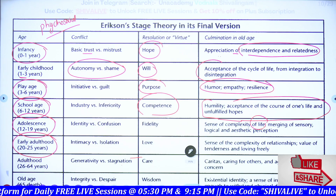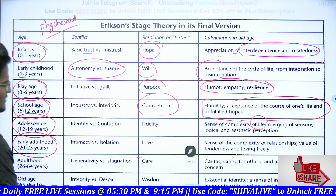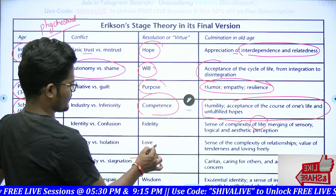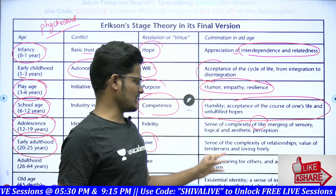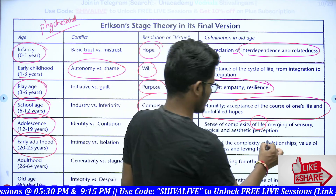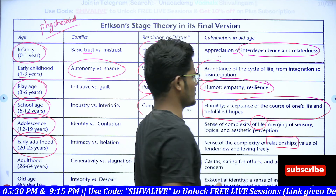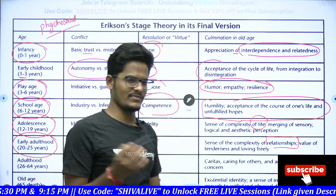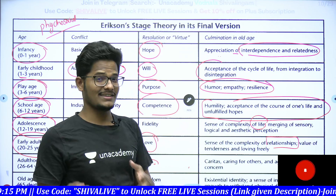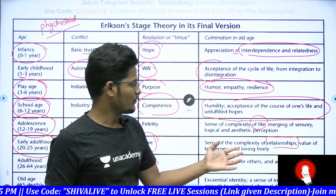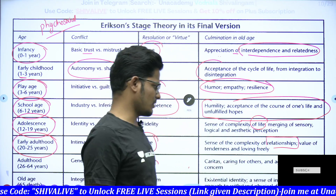Early adulthood involves intimacy versus isolation as the conflict. The virtue is love — we will be looking for love. There is a sense of complexity of relationships, and we give more importance to relationships in our twenties. That is why the majority fall in love at this stage. The value of tenderness and loving freely is key here.